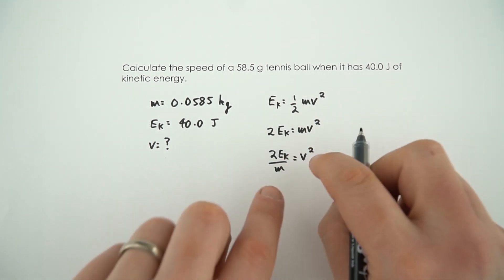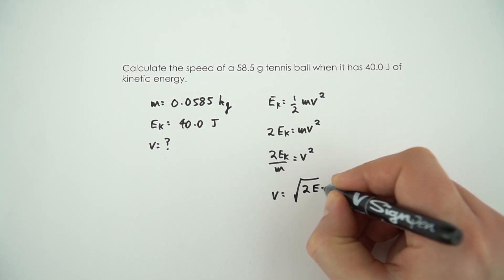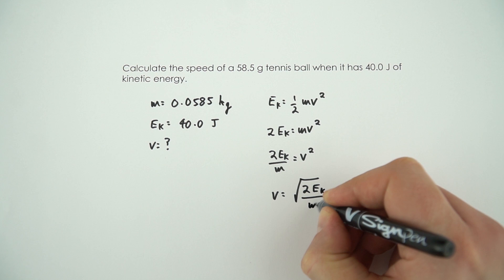So we can actually say, I'm just going to swap the two sides over to say that v is equal to the square root of 2Ek divided by m.